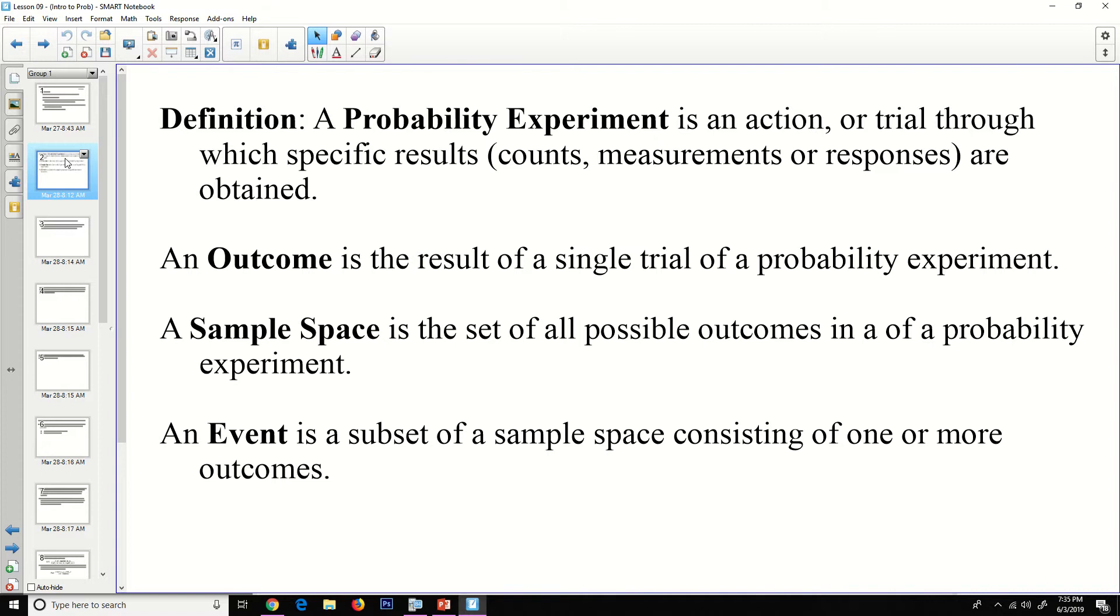Some definitions here. A probability experiment is an action or trial through which specific results, counts, measures, or responses are obtained. An outcome is the result of a single trial of a probability experiment. A sample space is a set of all possible outcomes of a probability experiment. An event is a subset of the sample space consisting of one or more outcomes. Notice that all of these lower definitions build on the definitions above it. That's why it's very important for us to talk about these definitions.